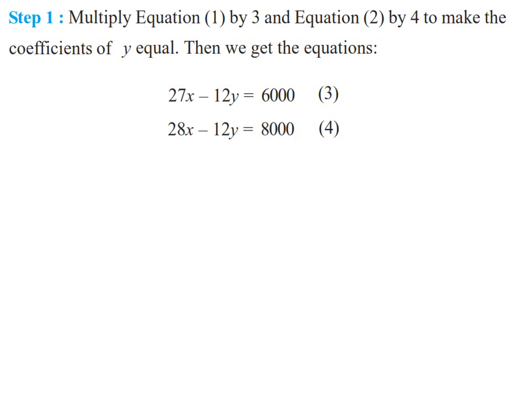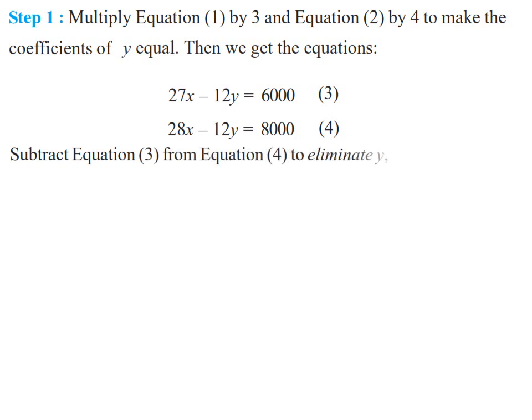Now we have to add or subtract both equations, number 3 and number 4. First check whether the coefficients are equal. Whenever the coefficients are equal, check the sign. Here, both have a negative coefficient of y, so we subtract. If both signs were the same (e.g., both plus 12y), we also subtract. But if signs differ (plus 12 and minus 12), we add. Since both coefficients are equal in sign, Step 2 is: subtract equation 3 from equation 4 to eliminate y.